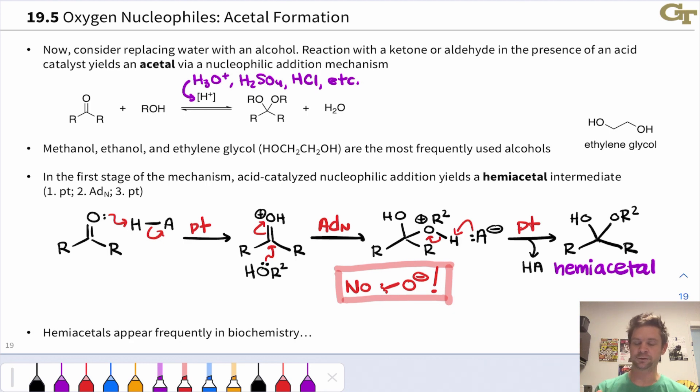It's called a hemiacetal because the structure retains an OH group in it. It doesn't have two OR groups. Notice in the acetal, I've got two alkoxy groups connected to the carbonyl carbon. In a hemiacetal, I have only one alkoxy group, and the OH group still retains the carbonyl oxygen. The carbonyl oxygen is still in there.